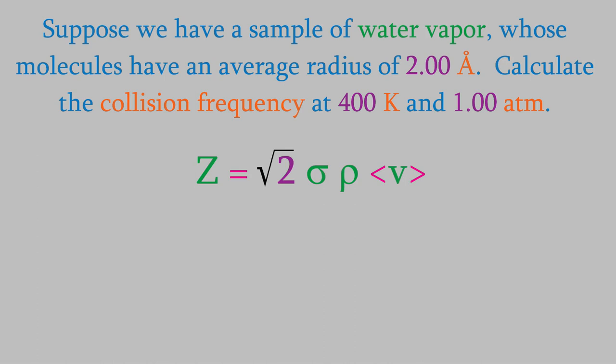Let's determine the collision cross section first. Remember, the collision cross section is pi times d squared, where d is the sum of the radii of the two colliding molecules. In this case, we're looking at collisions between two water molecules, so d is just the sum of each molecule's radius, for a total of 4.00 angstroms.